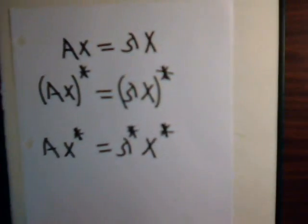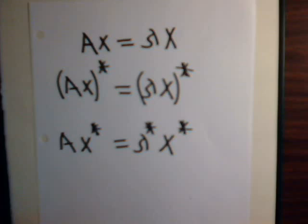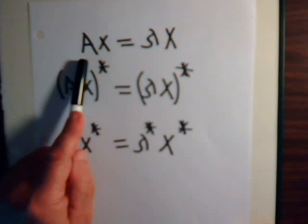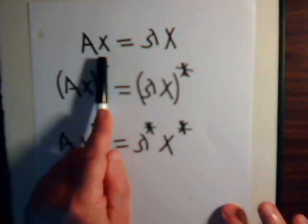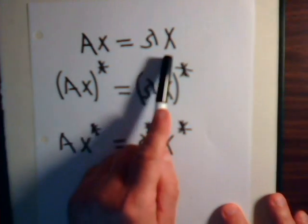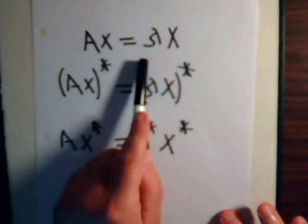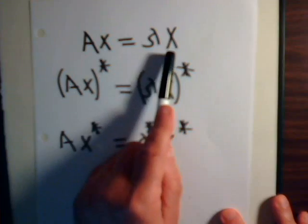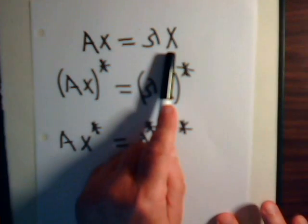We have a matrix, a simple matrix, times an eigenvector, gives an eigenvalue times an eigenvector. This is complex and this has complex components.